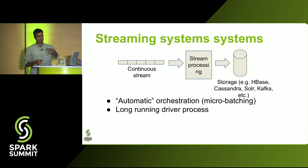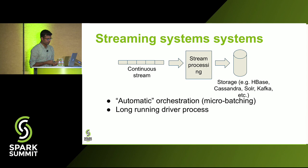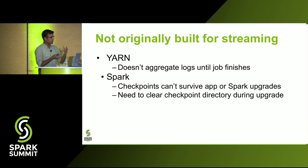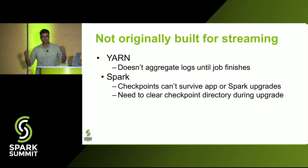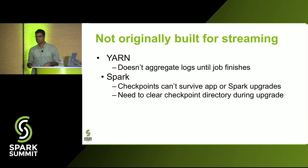Orchestration in Spark Streaming is automatic because it's a micro-batch system — every micro-batch interval you get a set of data and do something with it. But there are systems Spark Streaming uses that weren't originally designed for streaming. An example is YARN. YARN is a distributed resource manager with logs on all node managers, but it doesn't aggregate these logs into a single coherent place until the job finishes — and a streaming job never finishes.